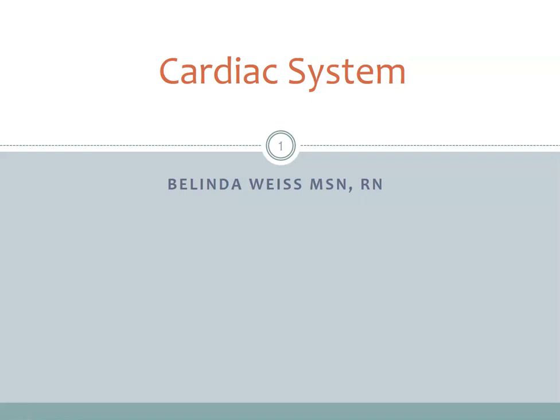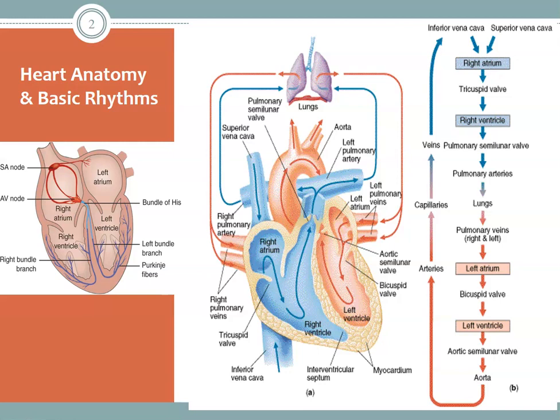Now we're going to take a look at the cardiac system. First, we're going to look at the blood flow of the heart. As I walk through this, please read through it on the right-hand side and look at the picture with the arrows so you'll have a better understanding of how blood flows through the heart. We know that the heart is a muscle, and the right and left sides work together in a continuous pattern of blood flow through the heart to the lungs and body.